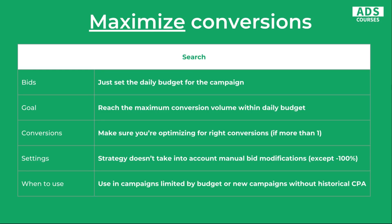Another strategy is Maximize Conversions. All you need to do here is set the daily budget for the campaign — you don't have the ability to set a CPA or ROAS. You just set the budget and the campaign will try to generate as many conversions within that budget. The goal is to reach maximum conversion volume with your budget, so make sure you're optimizing for the right conversions if you have more than one. This strategy doesn't take into account manual bid modifications except minus 100%. You should use Maximize Conversions when your campaigns are limited by budget or you have a new campaign without any historical CPA.